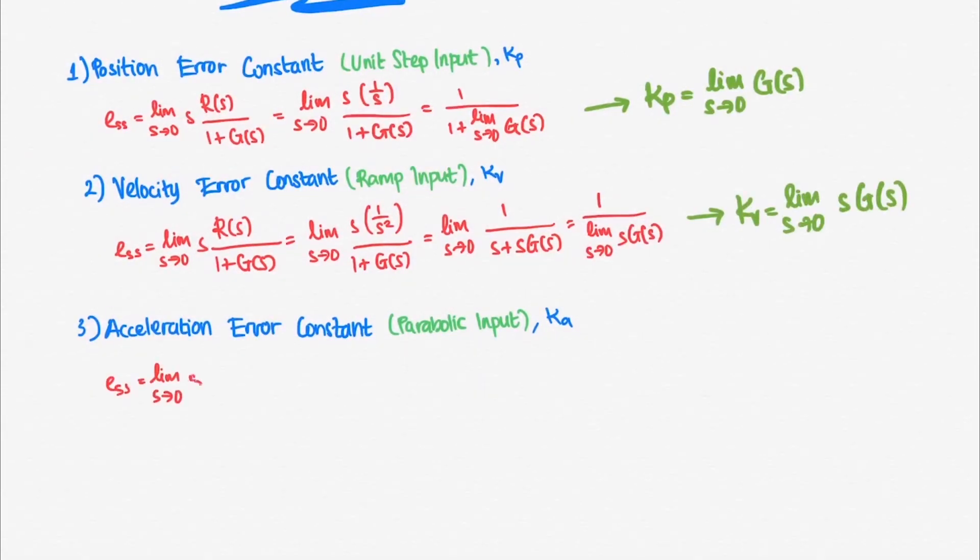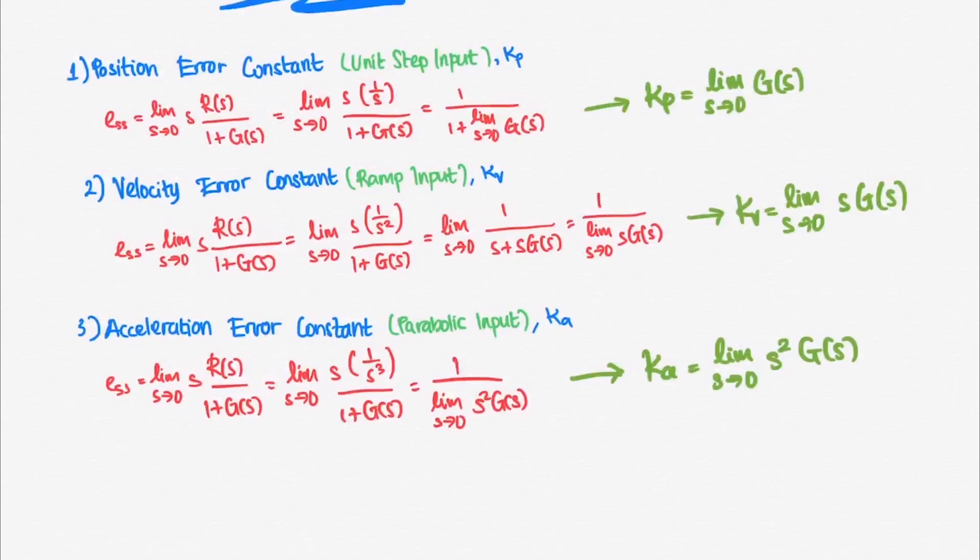Same thing applies if we want to derive velocity error constant or Kv using ramp input and acceleration constant Ka using parabolic input.